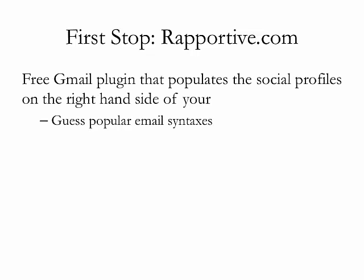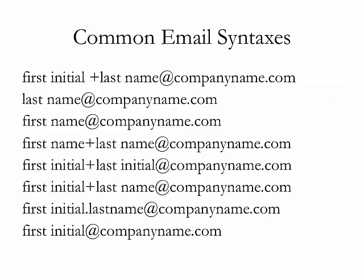The first tool I use to guess email addresses is a Gmail plugin found at Rapportive.com. It's called Rapportive, and basically what it does is populate social profiles on the right-hand side of Gmail when you have the correct email address. How you leverage this to figure out people's email addresses is by guessing popular common email syntaxes — their first initial plus last name, just their last name, or just their first name at the company domain. When you get a correct guess, you will start to see social profiles appear on the right-hand side of your Gmail inbox.